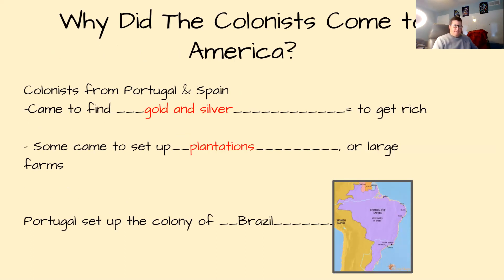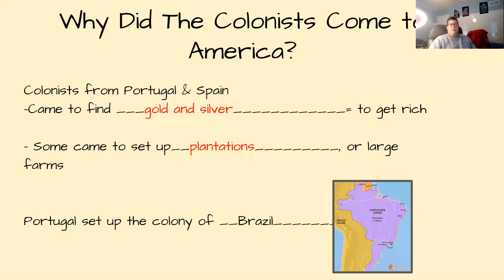Slavery in the Americas — at first, very few Europeans settled in the Americas. After more gold and silver were found, many more colonists came, hoping to get rich. Others came to start large farms called plantations. Colonists from Portugal and Spain came over; they came to find gold and silver to get rich — they were lured over by the idea of getting rich from the gold and silver they thought was here. Some came to set up plantations, or large farms.